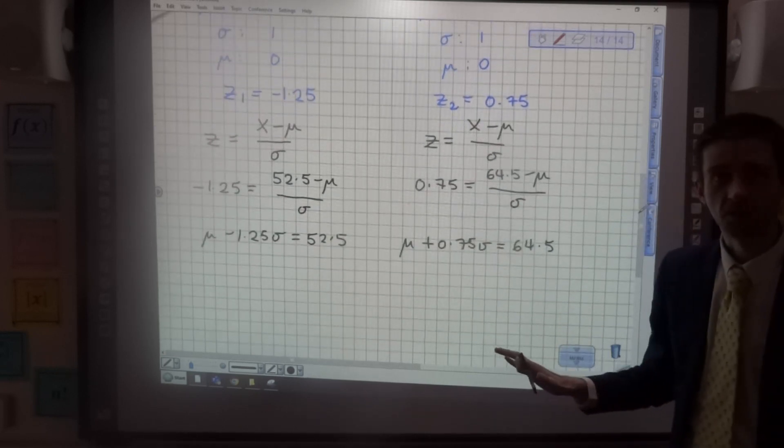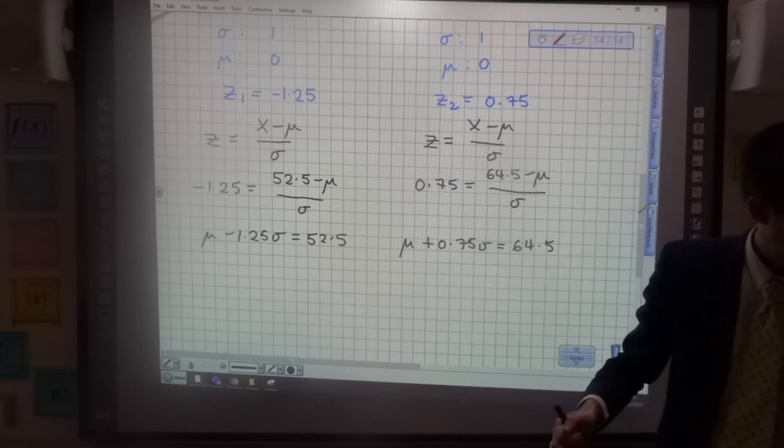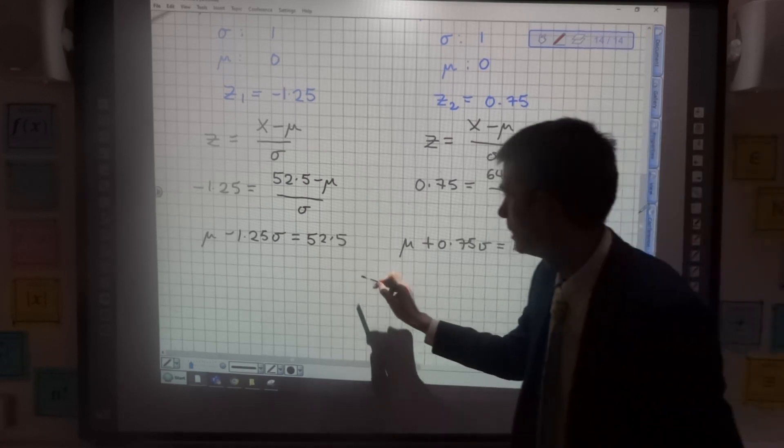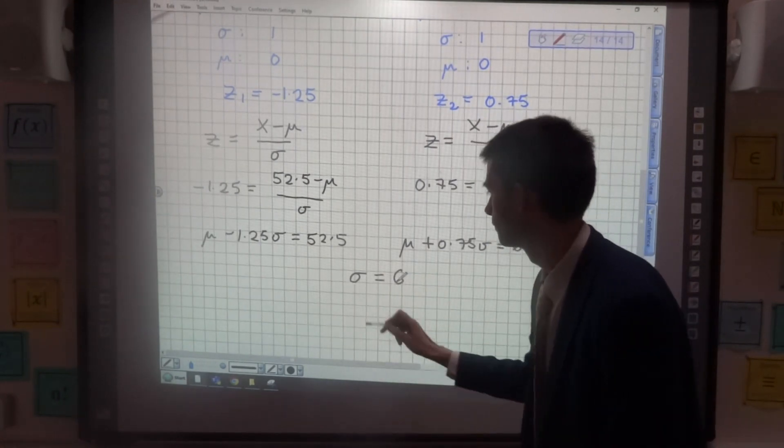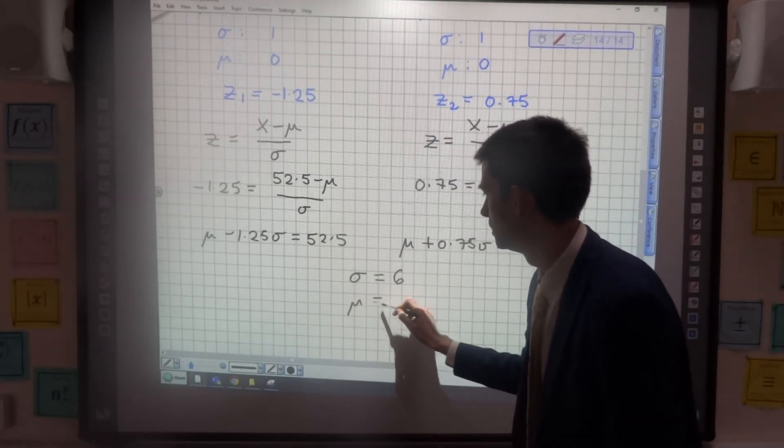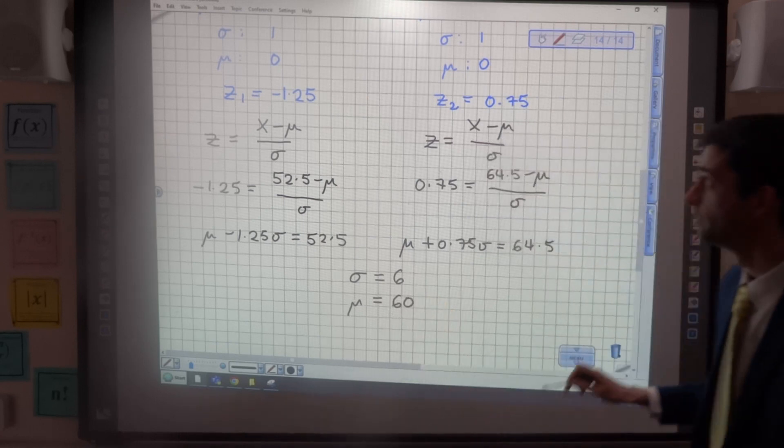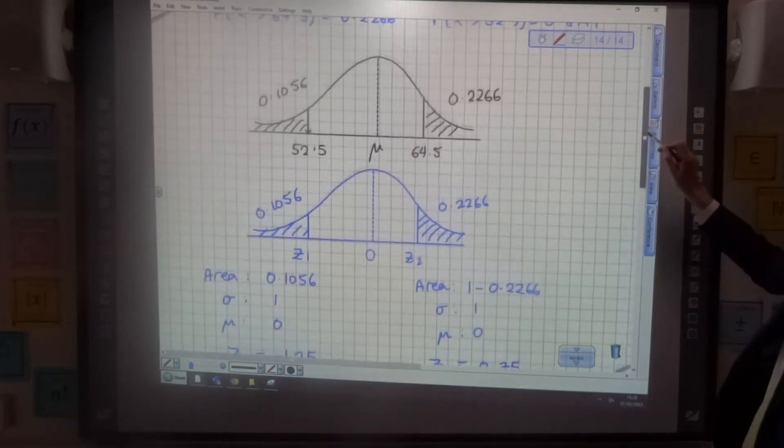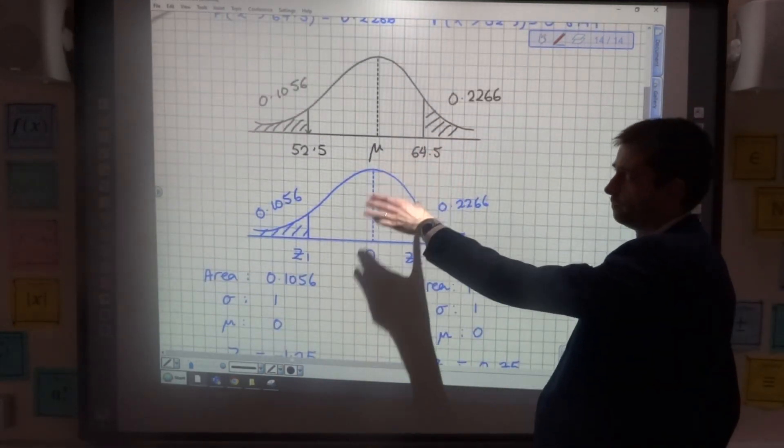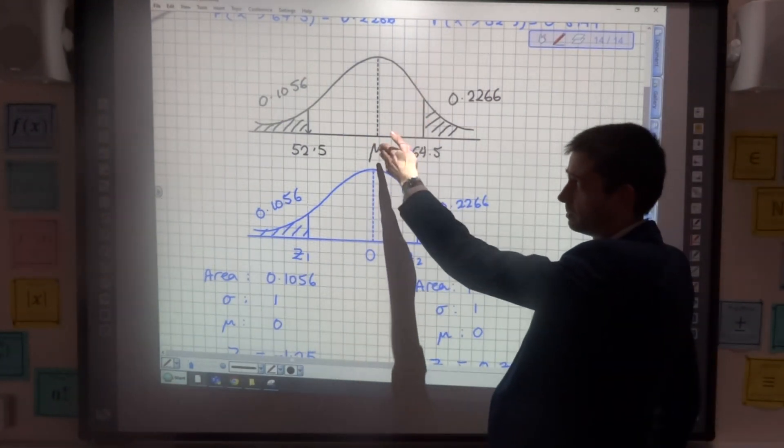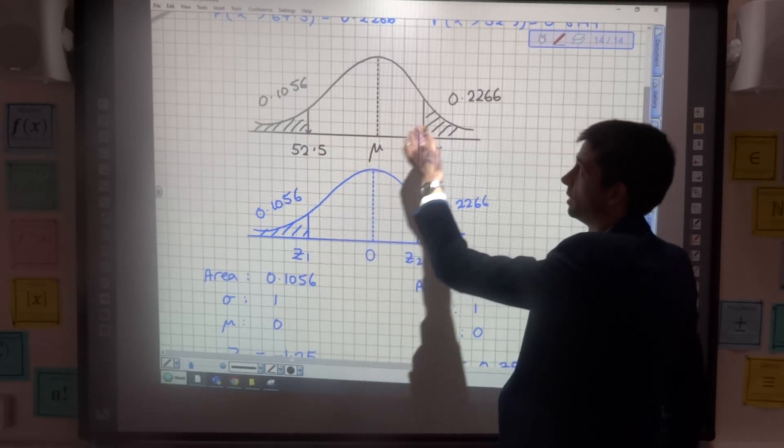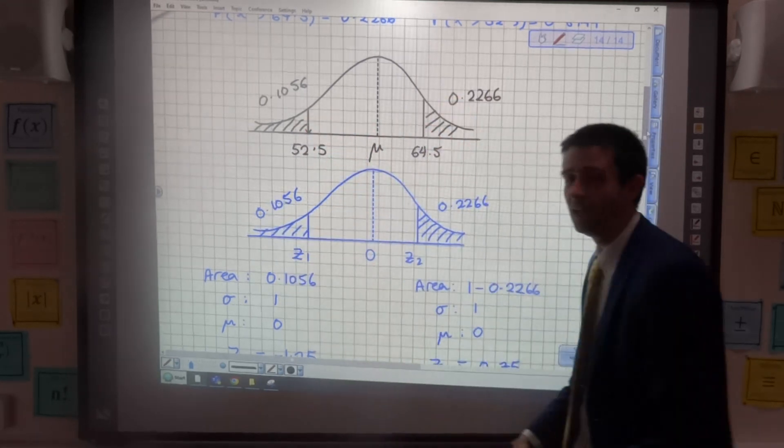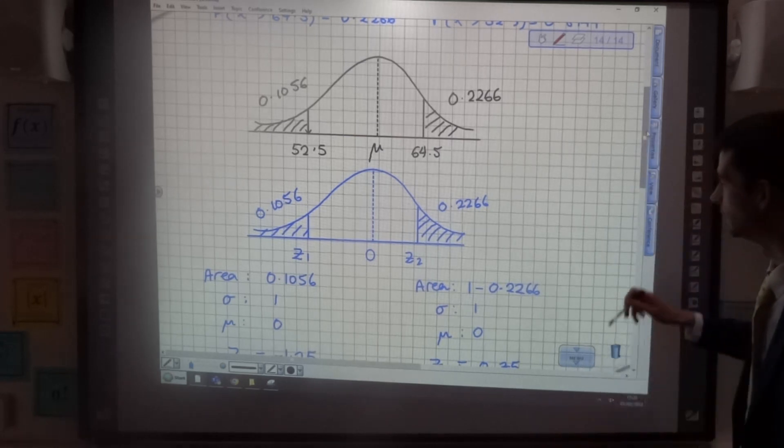Now I can solve that simultaneously on the calculator and I get my sigma to be 6 and my mean to be 60. That's for this normal distribution here. Which makes sense. Look, 60 is in the middle. 64.5 is closer to it than 52.5. So slightly bigger area here than here. It's all looking like it's making sense so far.